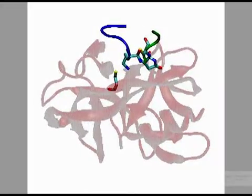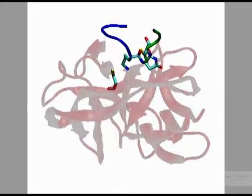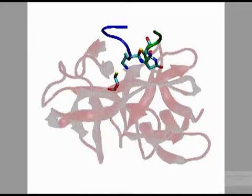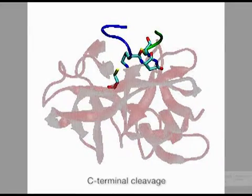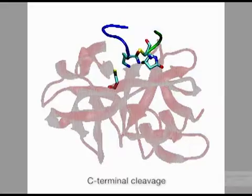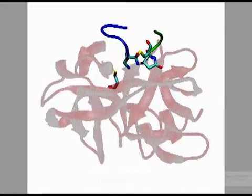Cleavage of the peptide bond between the asparagine residue and the C-Extein completes the splicing reaction, resulting in covalent separation of the Intein from a spliced Extein, leaving behind a succinamide form of the asparagine residue.